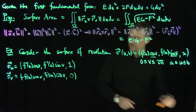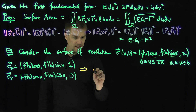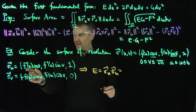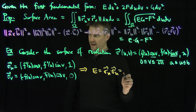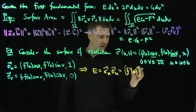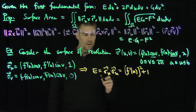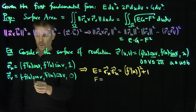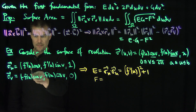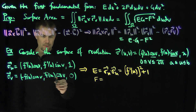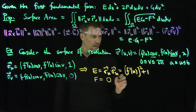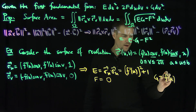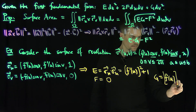Now let's compute the coefficients. E = σ_u dot σ_u = f′(u)² cos²v + f′(u)² sin²v + 1 = f′(u)² + 1. For F = σ_u dot σ_v: the terms cancel to zero, so F = 0. And G = σ_v dot σ_v = f(u)² sin²v + f(u)² cos²v = f(u)².